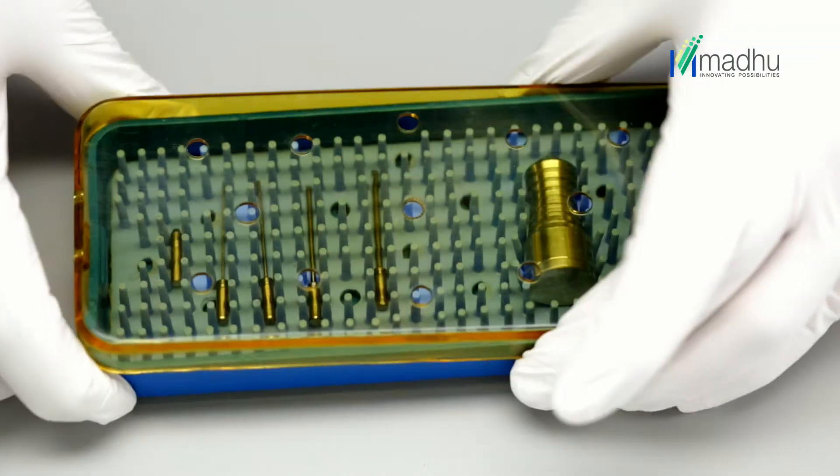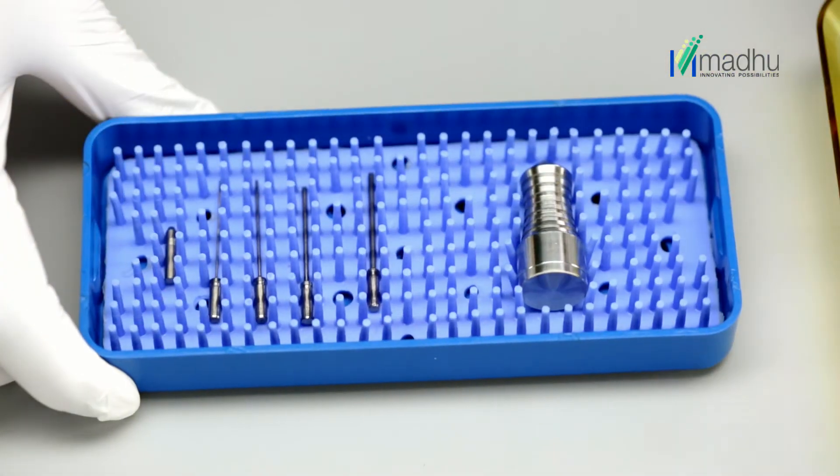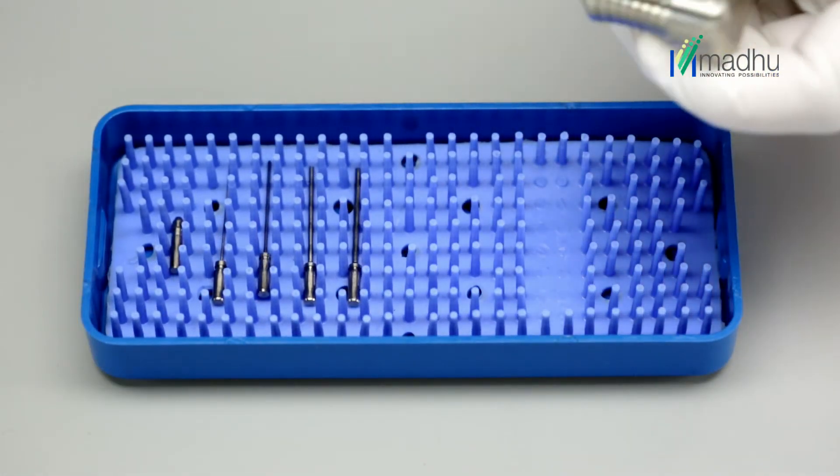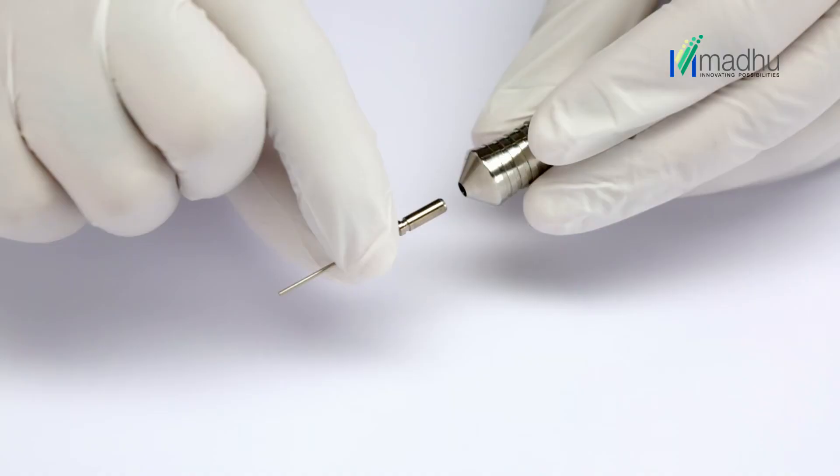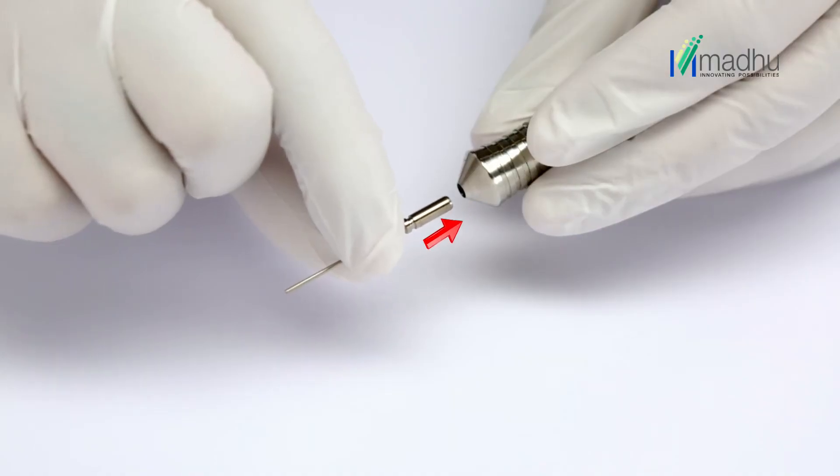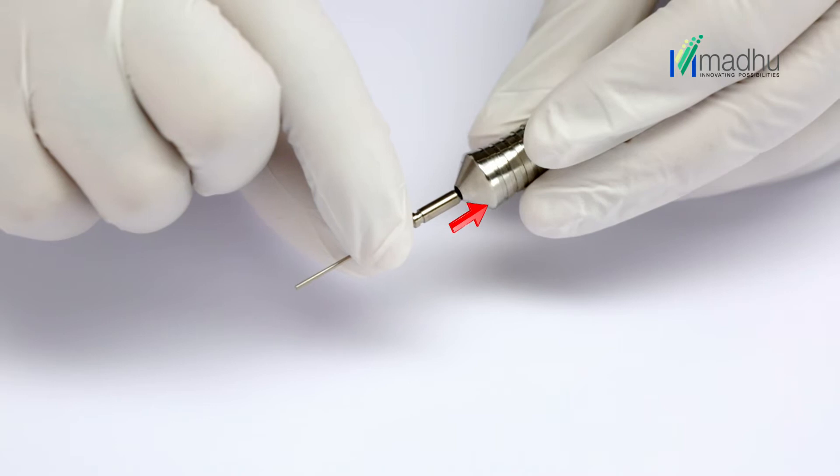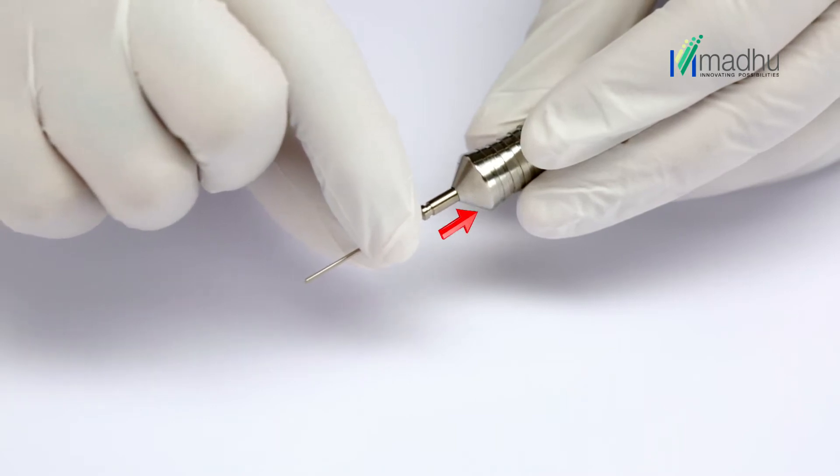Open the sterilization tray and take out the intraocular magnet handle along with the desired gauge of magnet tip. Carefully hold the tip base and position it in front of the handle cavity.